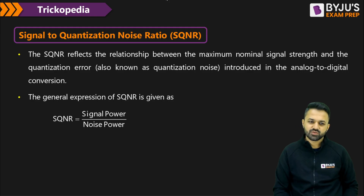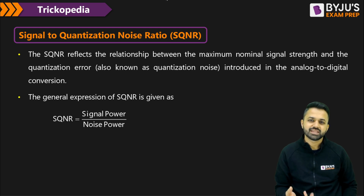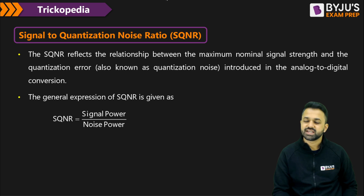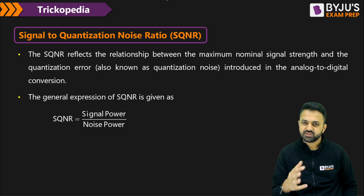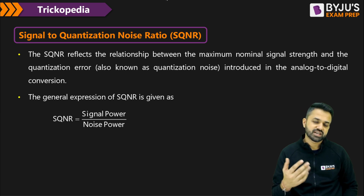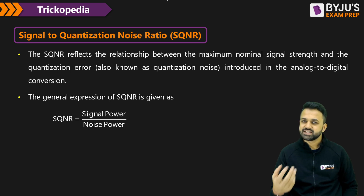When we quantize a signal, we approximate the amplitude to the nearest quantization level. In this way we round off the values of the input signal, and by doing so we create an error, which is known as the quantization error.